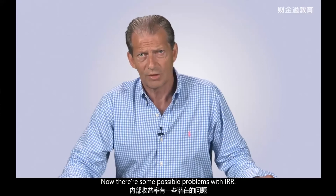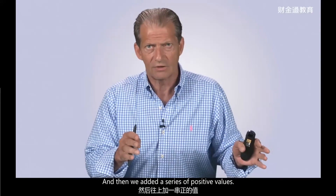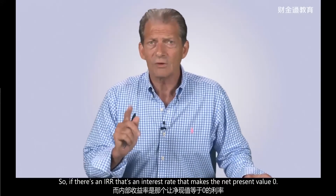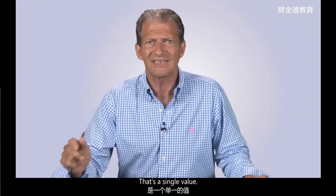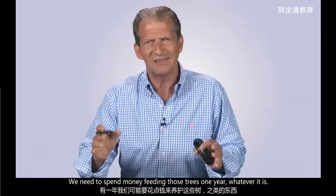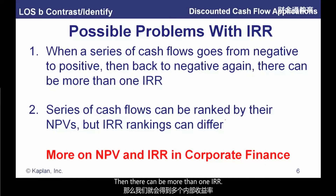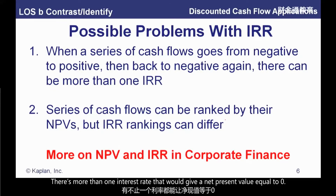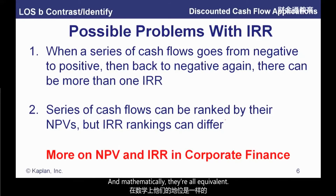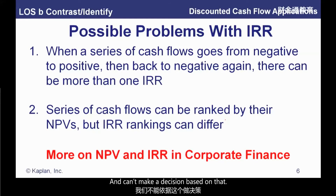Now there are some possible problems with IRR. We've had simple projects where we've had one negative value — the initial outlay — and then a series of positive values. If there is an IRR, that's a single value. But if we make more of an investment at some point in time — say we're planting trees and need to spend money thinning them one year — and we go from negative to positive and then back to negative, then there can be more than one IRR. There's more than one interest rate that gives a net present value equal to zero, and mathematically they're all equivalent. We can't differentiate among them and say this is the right one. So with more complex projects, we can get multiple IRRs and can't make a decision based on that.